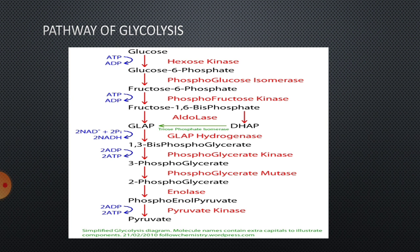The enzymes involved in these reactions are: first, kinase; second, isomerase; third, kinase; fourth, aldolase; fifth, isomerase; sixth, dehydrogenase; seventh, kinase; eighth, mutase; ninth, enolase; and the tenth is kinase. If you observe clearly, the first reaction is done under the control of kinase enzyme and similarly the tenth reaction. One thing you must remember: when kinase is the enzyme in a reaction, you can understand that there must be the formation or utilization of ATP.